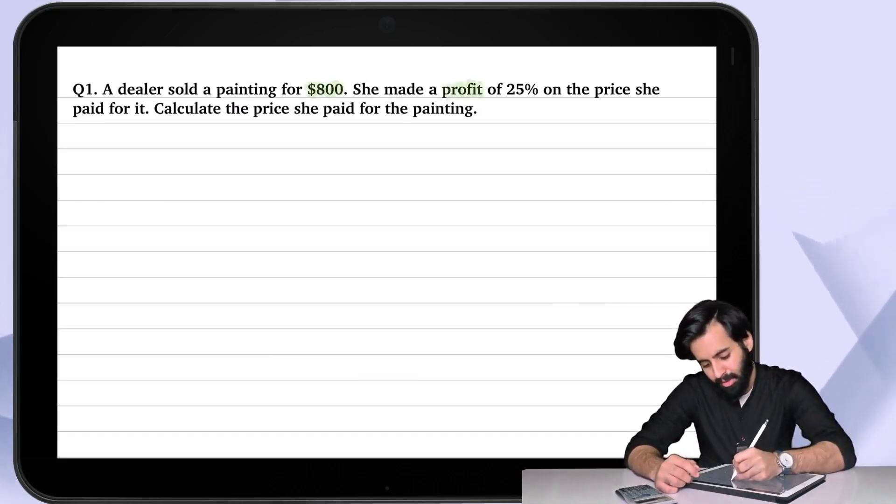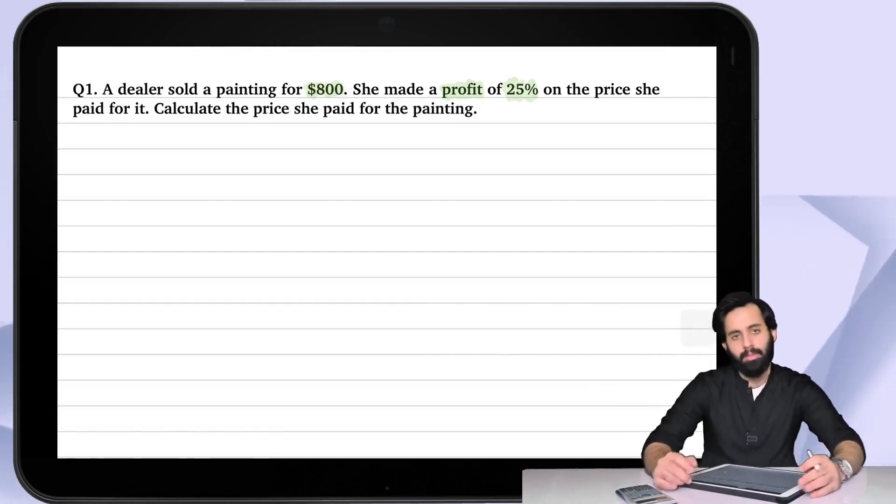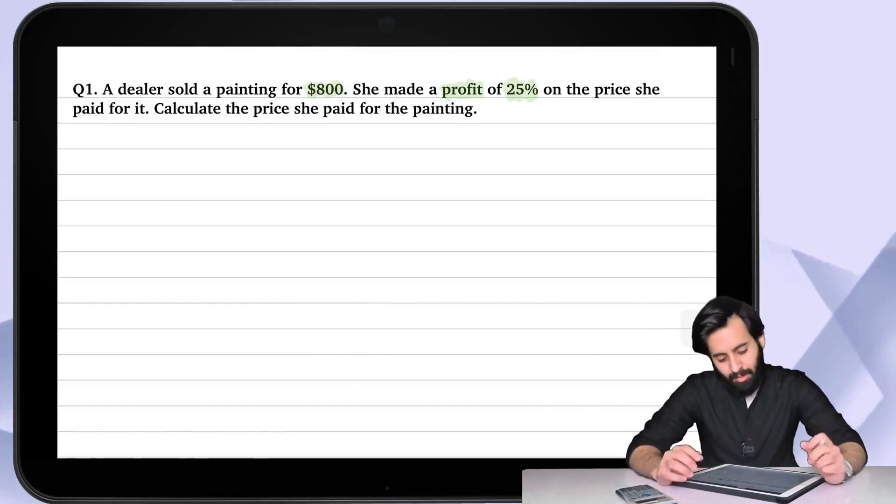She made a profit, so profit here is a keyword, of 25 percent on the price she paid for it. Calculate the price she paid for the painting. Let's take a step back and try to understand this question.